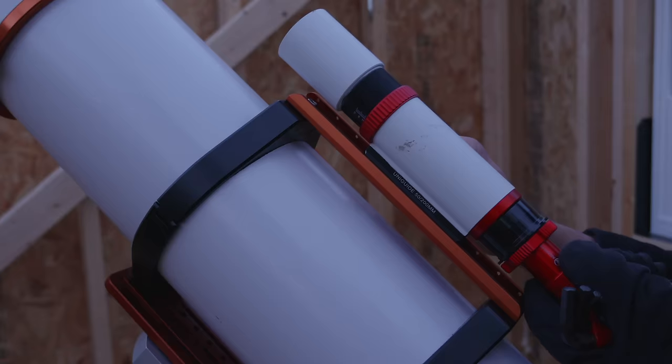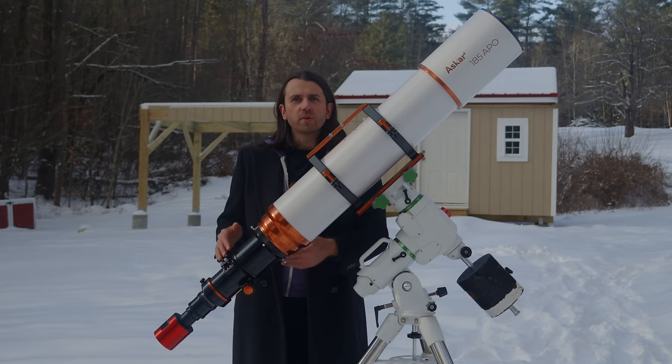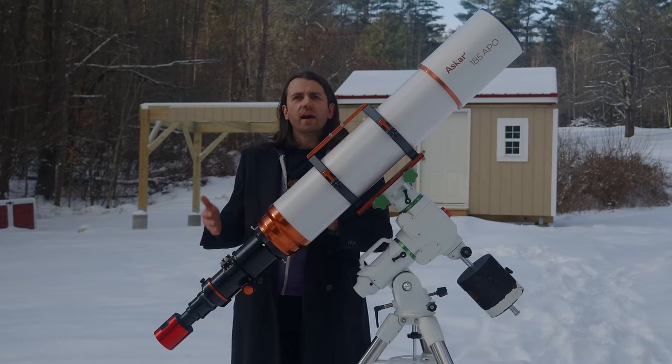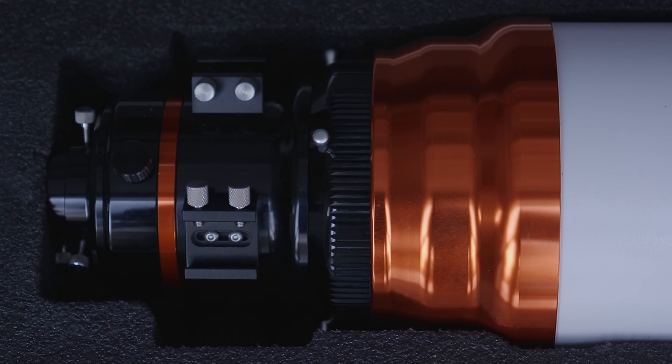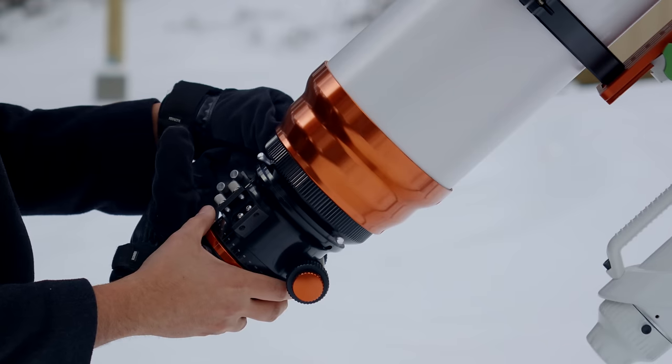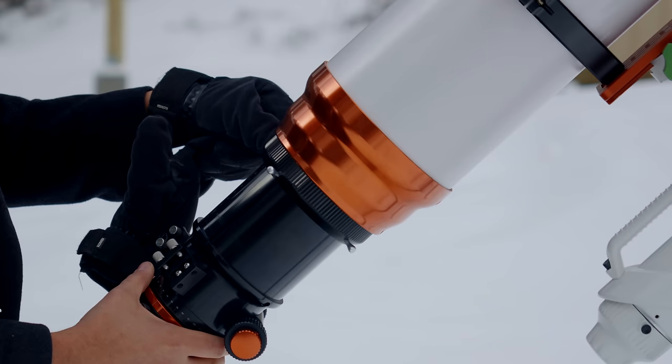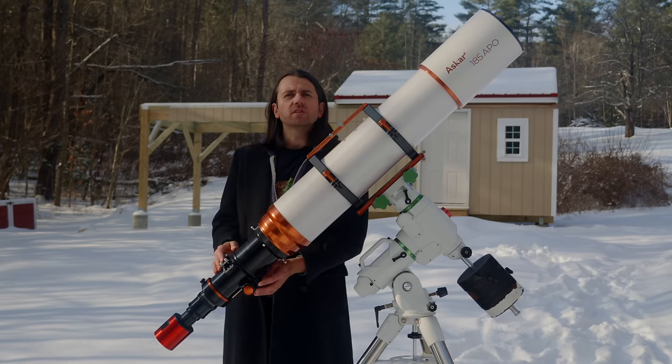It does have a top handle here which doubles as a place to attach accessories like a guide scope. The back of the telescope is retractable with this tube, it's fully contracted for storage and then if you want to use the scope with a bino viewer for imaging other uses, you're going to extend this part all the way out with this captain's wheel.